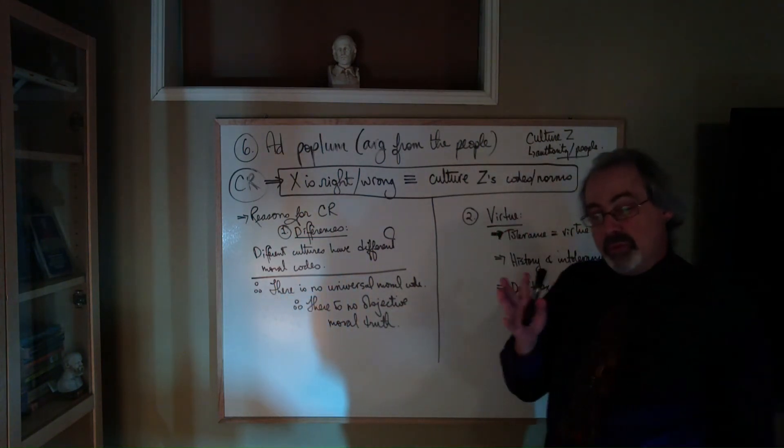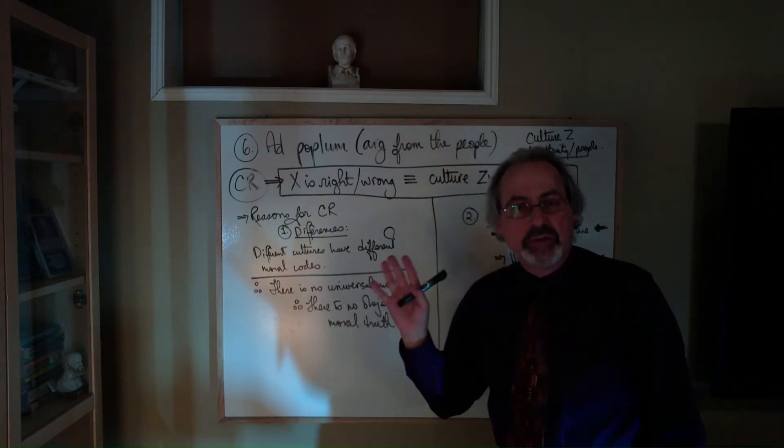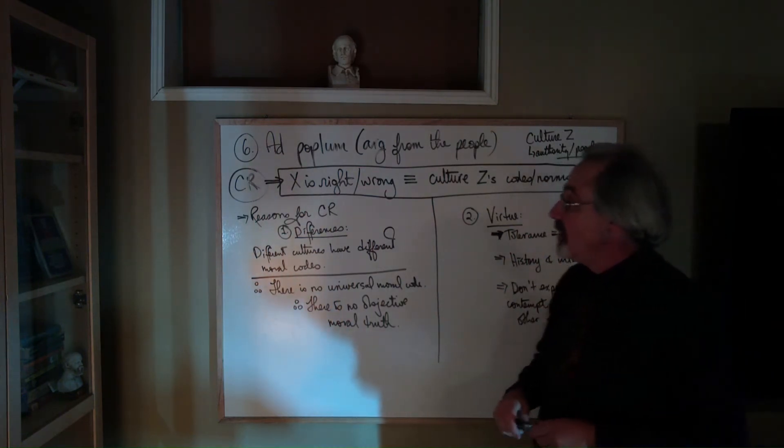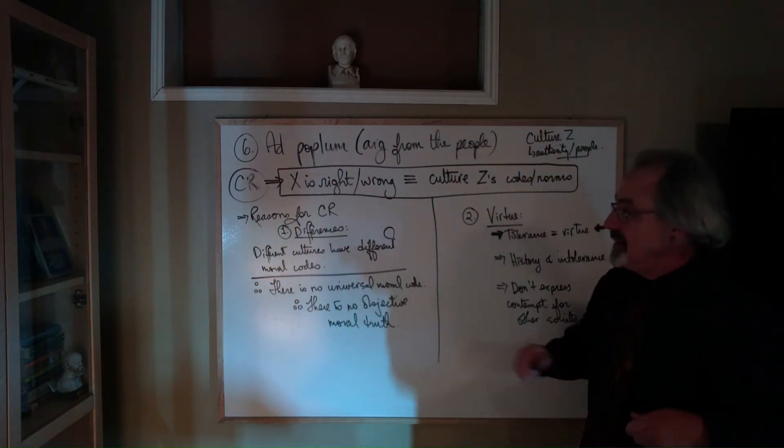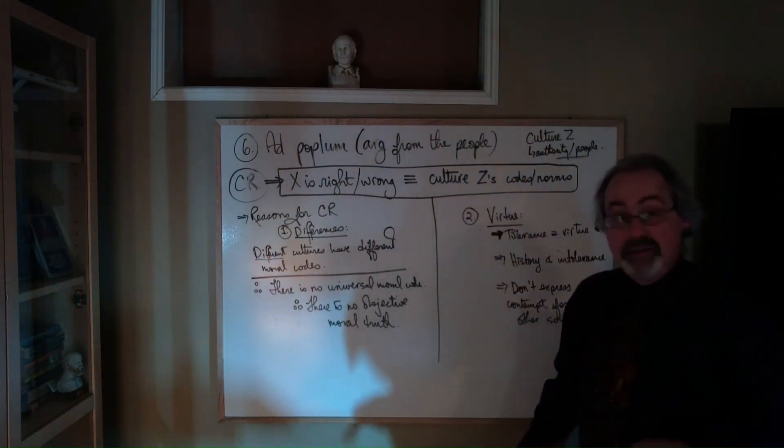Now, what people are really getting at with this 'no universal moral code' is something a little bit stronger: that there's no objective moral truth. So why do I call it a differences argument? Because it moves up here from differences.